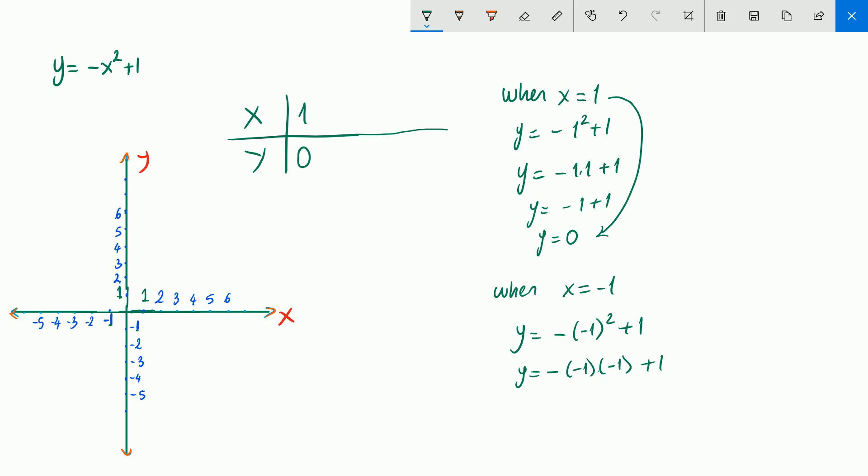Don't forget we do multiplication before all operations. So negative 1 times negative 1 will be 1. So this negative sign here will be positive 1. But still, it has a negative sign. Negative 1 plus 1 will be 0 again. When x is negative 1, y will be 0 again. Let's write the second point. Negative 1 and 0.